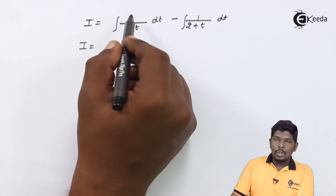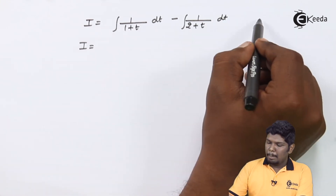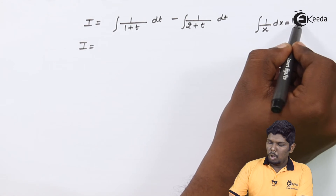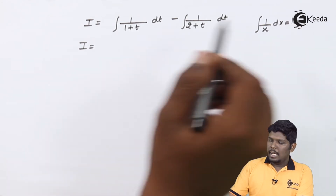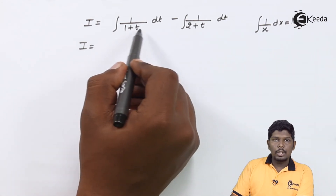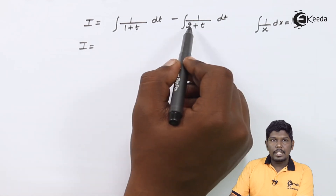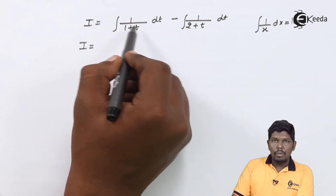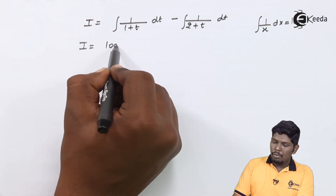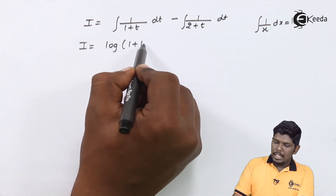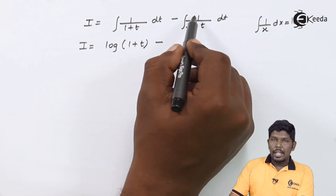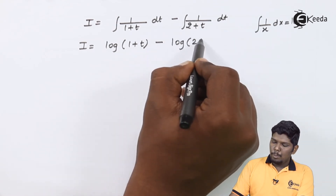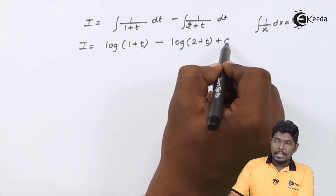To find the integration of 1/(1 + t), we compare it with the integral of 1/x, which gives log x. Since (1 + t) and (2 + t) are both linear terms, the integral of 1/(1 + t) gives log|1 + t|, and minus the integral of 1/(2 + t) gives log|2 + t|, plus a constant c.